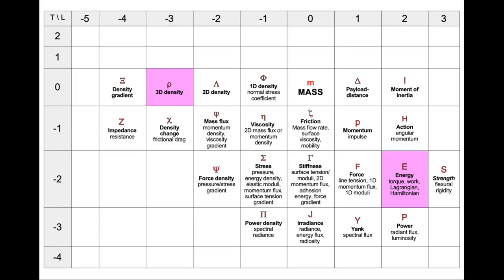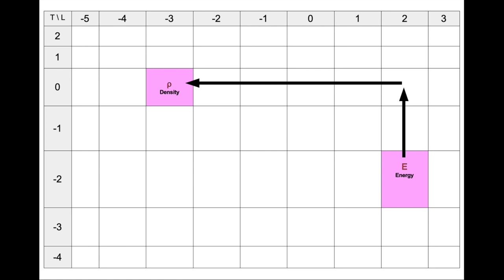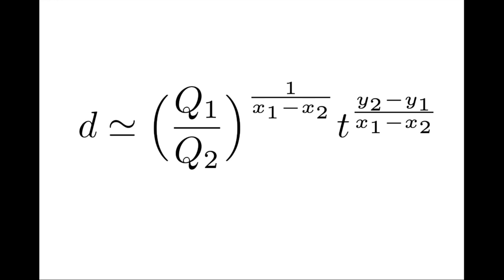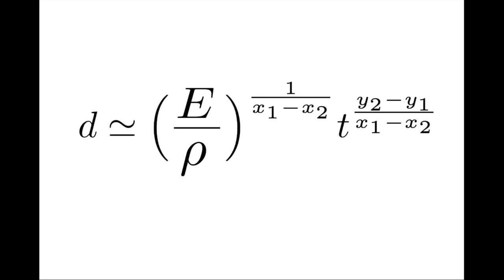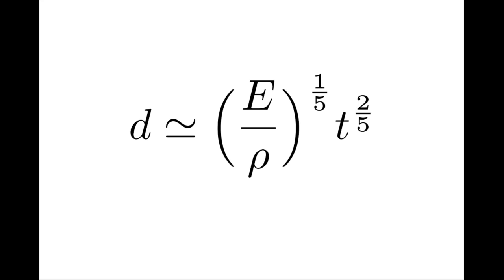The answer was given by the British physicist G.I. Taylor, and we've given it away already. Consider the relative place of density and energy in the table — they are separated by two lines in the space direction. Going back to our general formula, we consider the special case where the impaling factor is an energy E and the impeding factor is a density rho. x1 minus x2 is 5, and y2 minus y1 is 2. So if a size grows over time under the influence of energy and density, it must do so as d proportional to time to the power 2 over 5. The fact that size d is proportional to t to the power 2/5 is a direct consequence of the dimensions of energy and density underlying this motion. Once the opposing factors are known, the kinematics are known. The mechanics imply the kinematics.